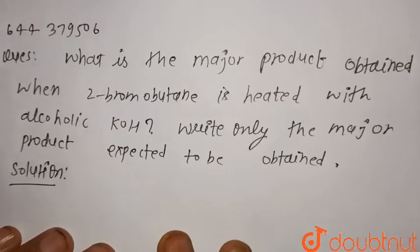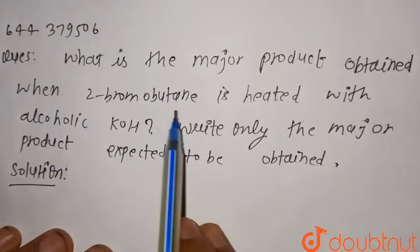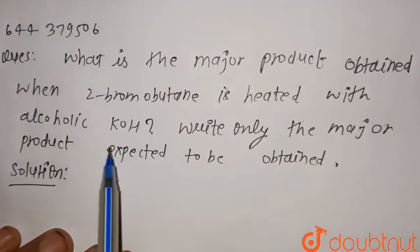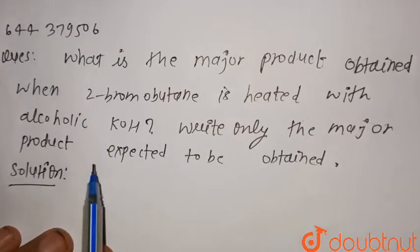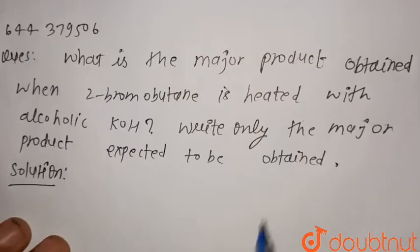Hello everyone, consider the given question: What is the major product obtained when 2-bromobutane is heated with alcoholic KOH? Write only the major product expected to be obtained.